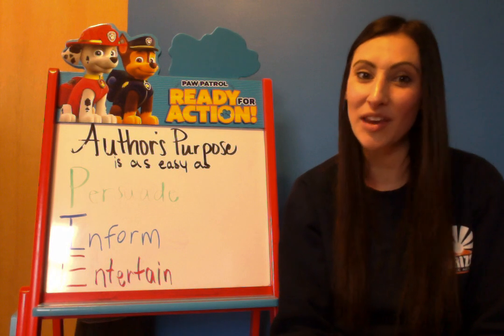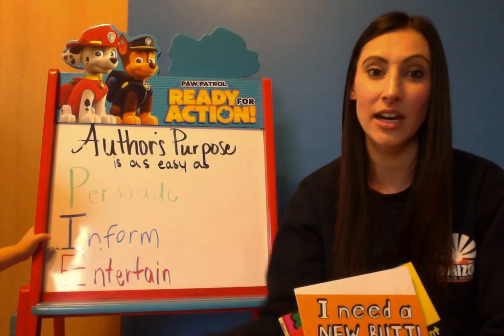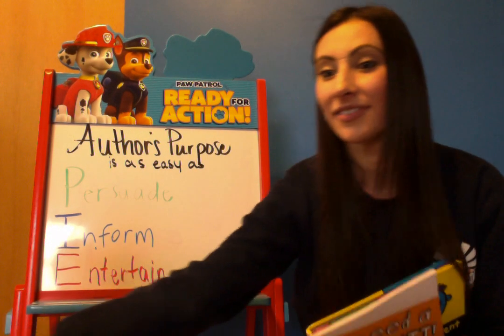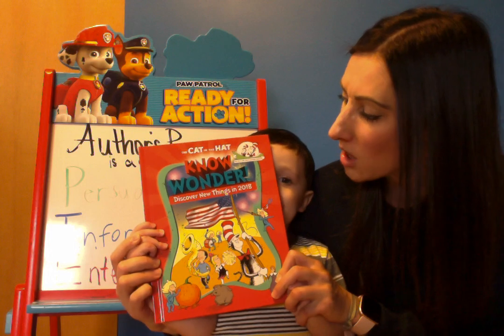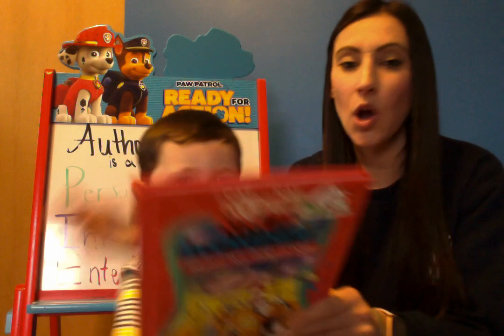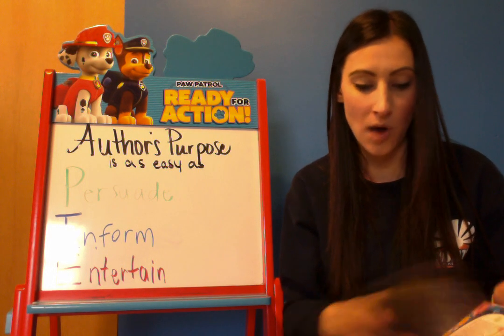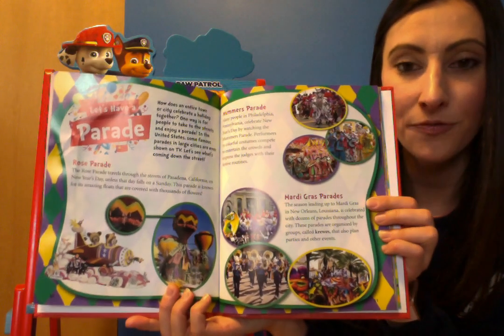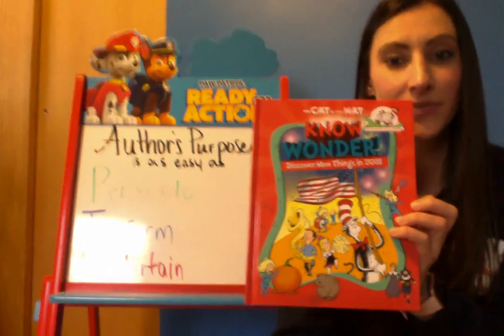Let's practice. I have three books here and you're going to decide: is it a P, is it an I, or is it an E? Because your activity this week involves sorting books to decide the author's purpose. Here is our first book — it's a Dr. Seuss called 'No Wonder: Discovering Things in 2018.' Let me open it up so you can see inside, because the inside is very important. As you can see, these are real photographs, not illustrations.